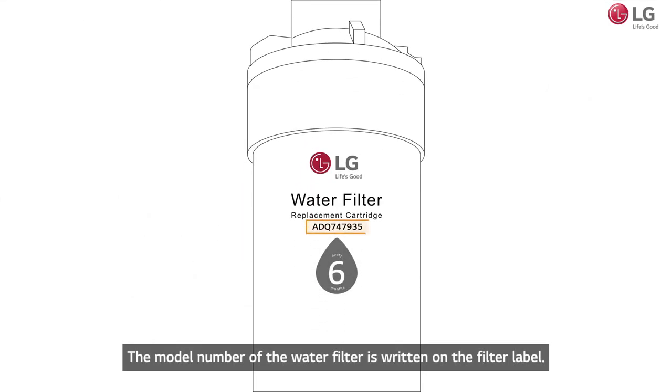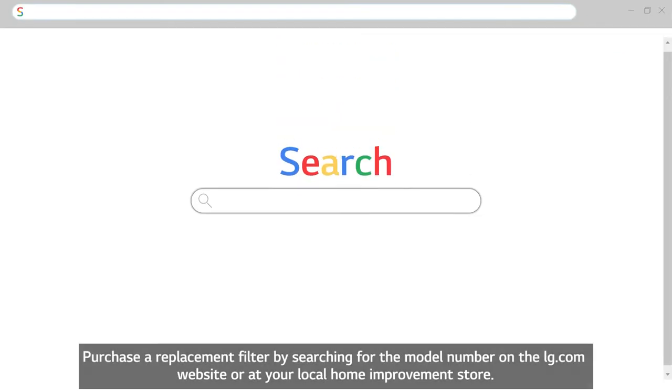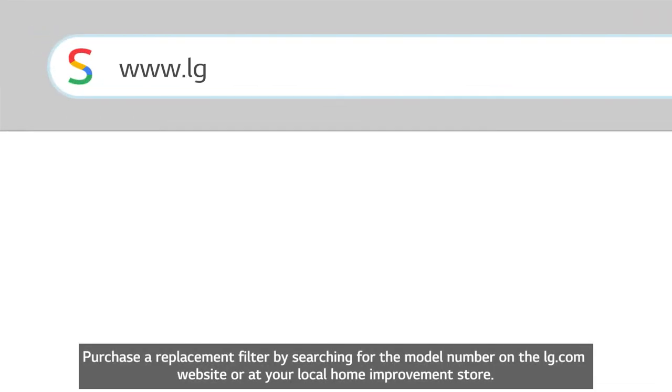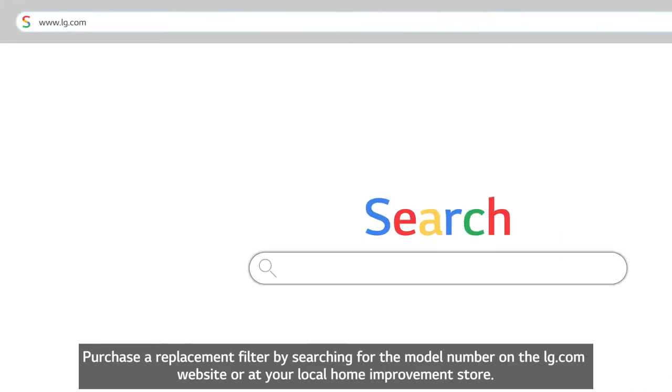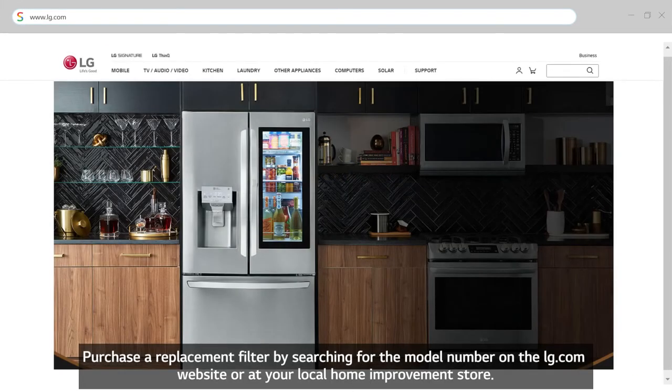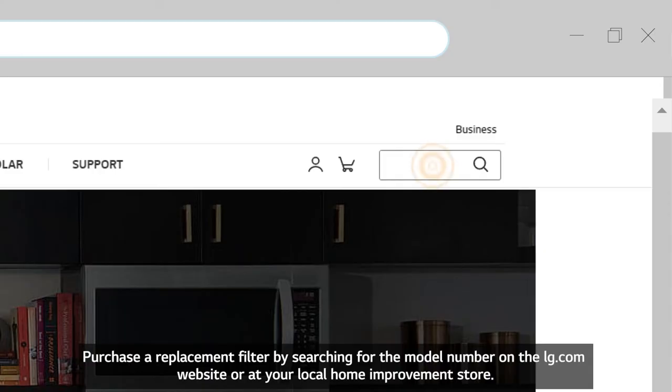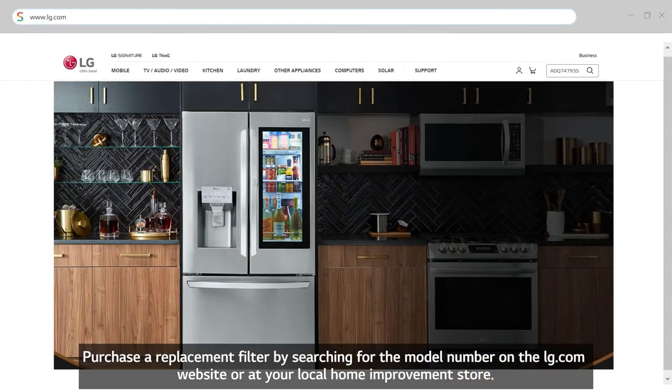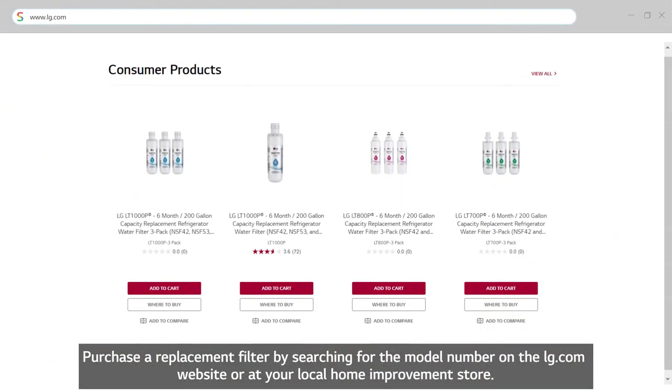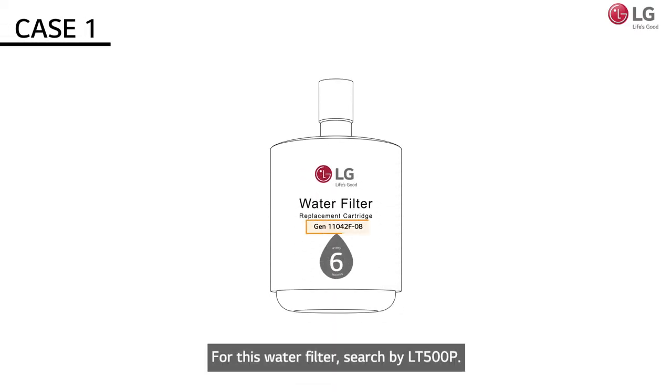The model number of the water filter is written on the filter label. Purchase a replacement filter by searching for the model number on the LG.com website or at your local home improvement store. For this water filter, search by LT500P.